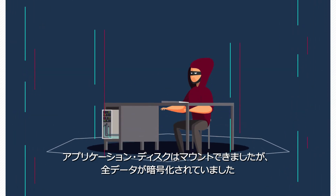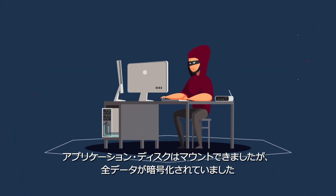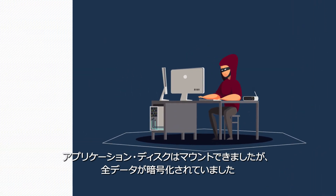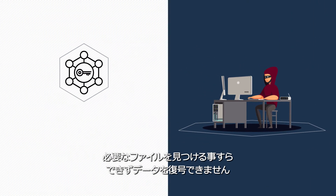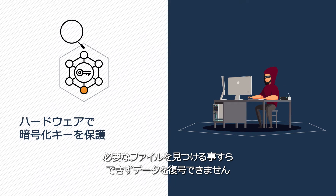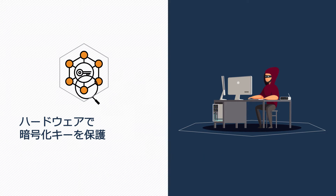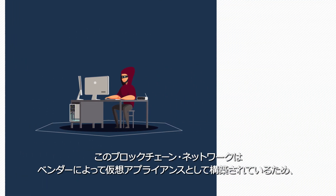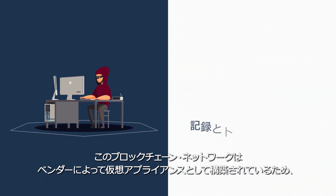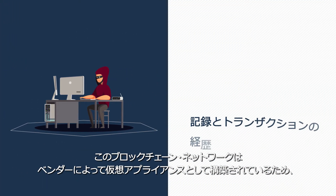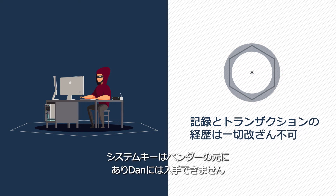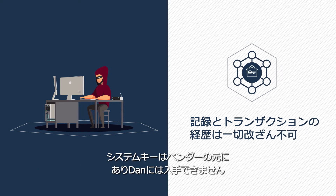He can mount the application disk, but this time all of the data is encrypted. He can't even find the files he needs and he can't decrypt the data because the necessary private key isn't held on the system. Because this blockchain network was created by the vendor as a virtual appliance, the system key never left the vendor and is unavailable to Dan.